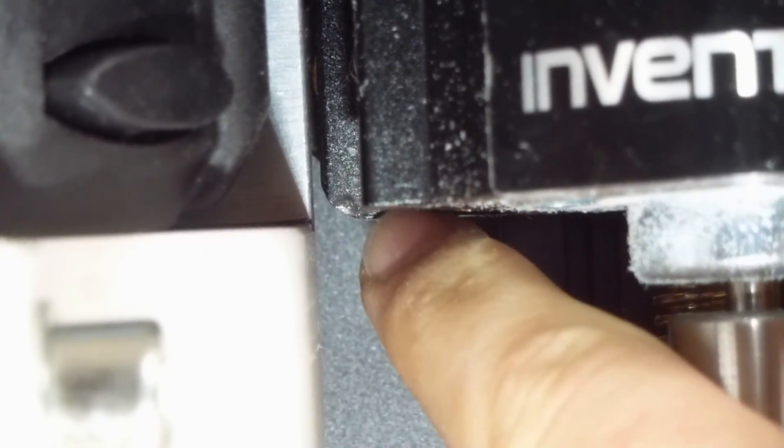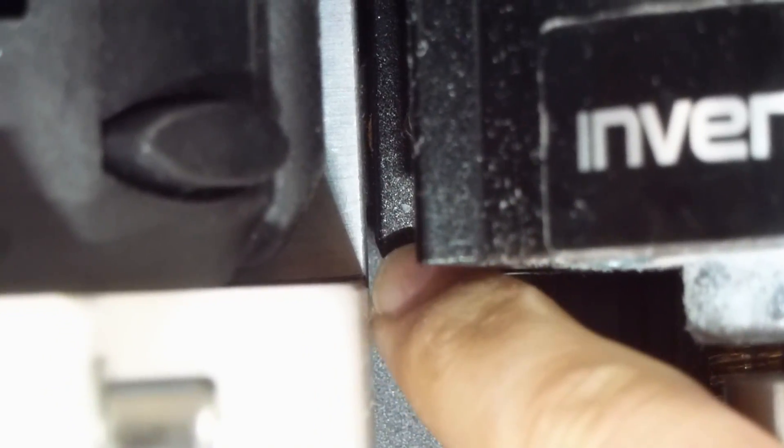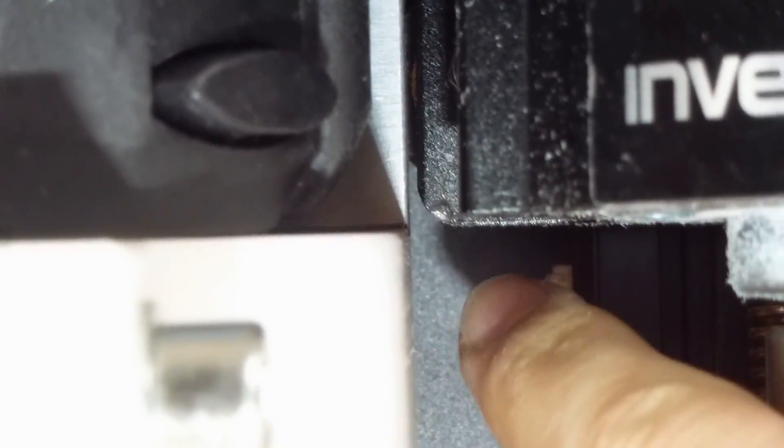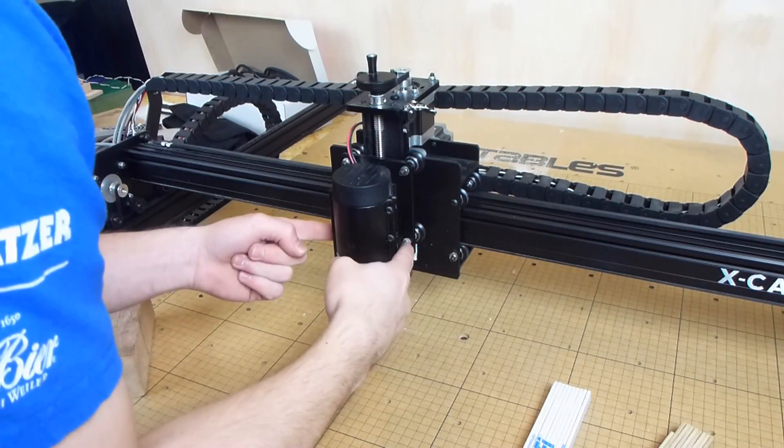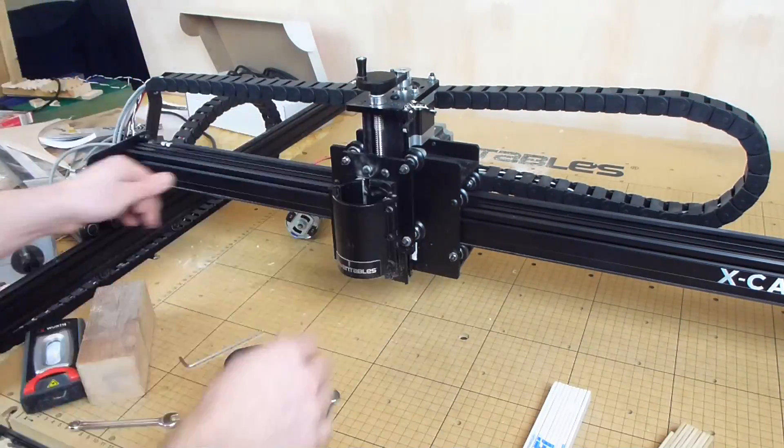It seems like this edge of the old mounting plate lines up perfectly with the surface of the new mounting bracket. This should make it really easy to transfer the holes. But first I need to get access to these holes so I need to take the Z-axis apart.